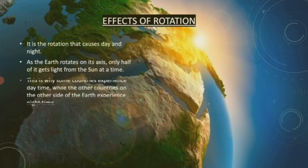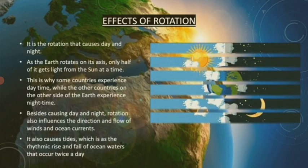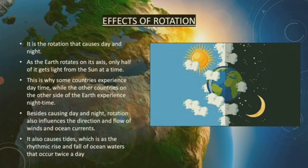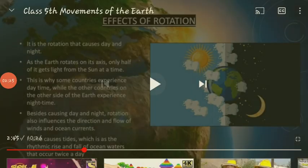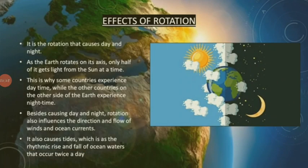It is the rotation that causes day and night. As the Earth rotates on its axis, only half of it gets light from the Sun at a time. This is why some countries experience daytime while the other countries on the other side of the Earth experience nighttime.